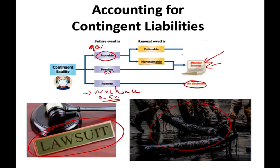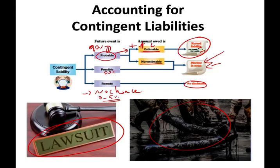If the probability of losing is probable and the loss is estimatable — meaning you can estimate the amount — then you have to record a liability. The evidence is stacked against you and the science is proven that you are at fault. You debit an expense and credit a liability. You only record a liability if two conditions exist: it is probable, and it is estimatable. You have to know the amount of the loss.